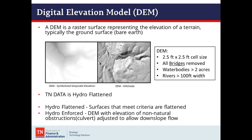Our next product is a digital elevation model, or DEM — a raster surface representing the elevation of terrain, in our case the bare earth ground surface. The image on the left is a grayscale image; when you bring it into mapping software, clicking a pixel would show an elevation value. The image on the right is a hill-shaded elevation model showing the terrain. Our DEMs are two and a half feet by two and a half feet cell size. All bridges are removed and the DEMs are hydro-flattened, meaning water bodies greater than two acres and rivers greater than 100 feet in width are flattened to a common elevation.